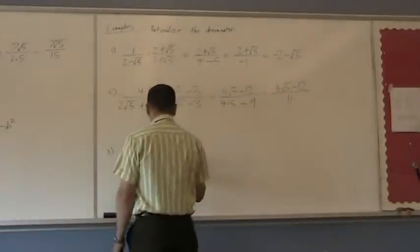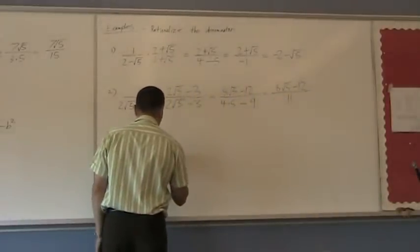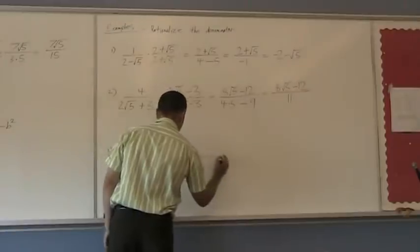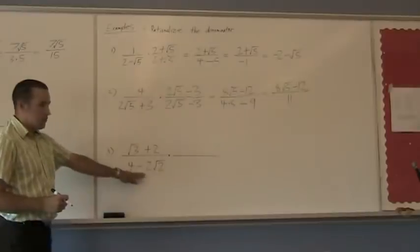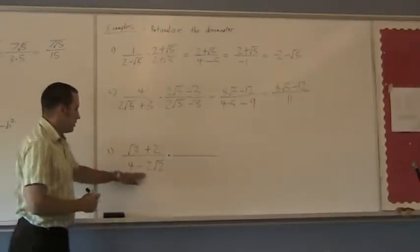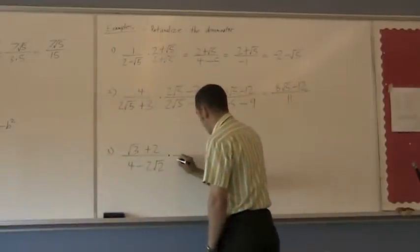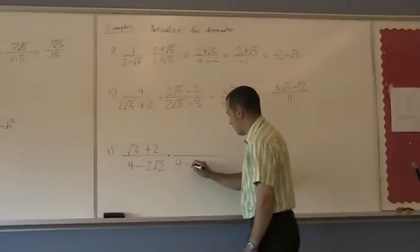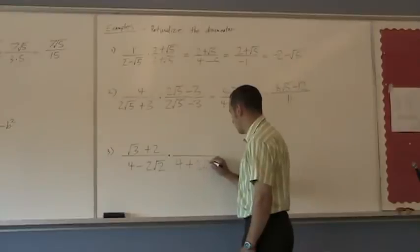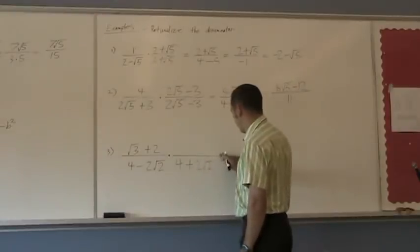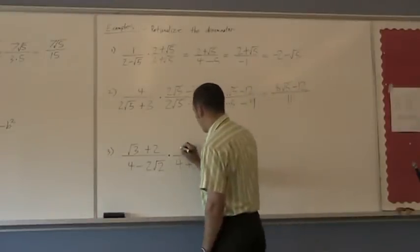One more, a little harder. This one, here's my denominator. The conjugate is going to be 4 plus, that's a subtract, 4 plus 2 square root of 2. On the top, same thing.